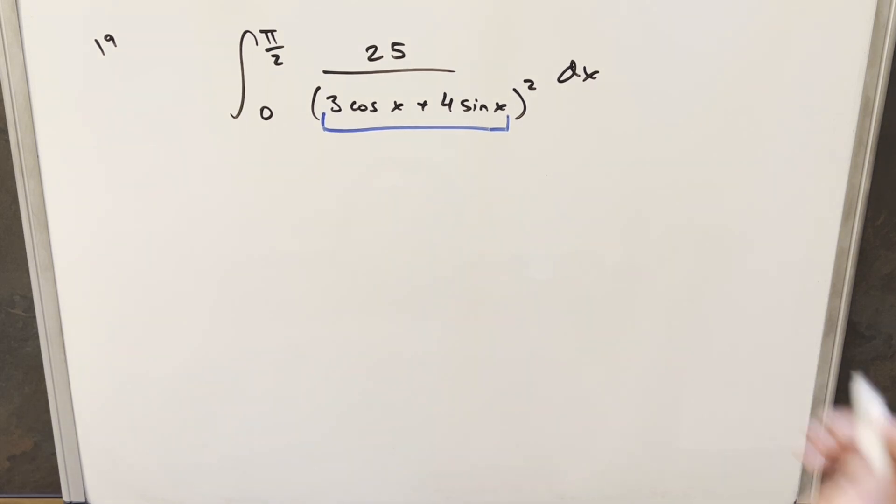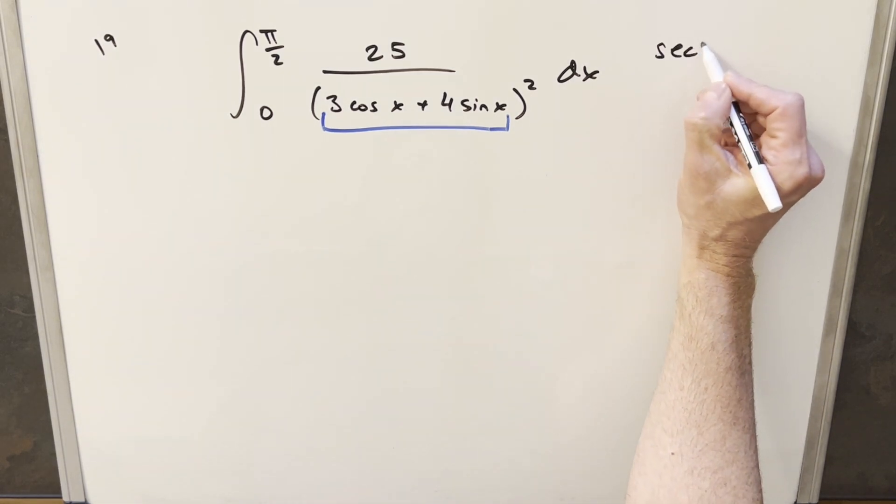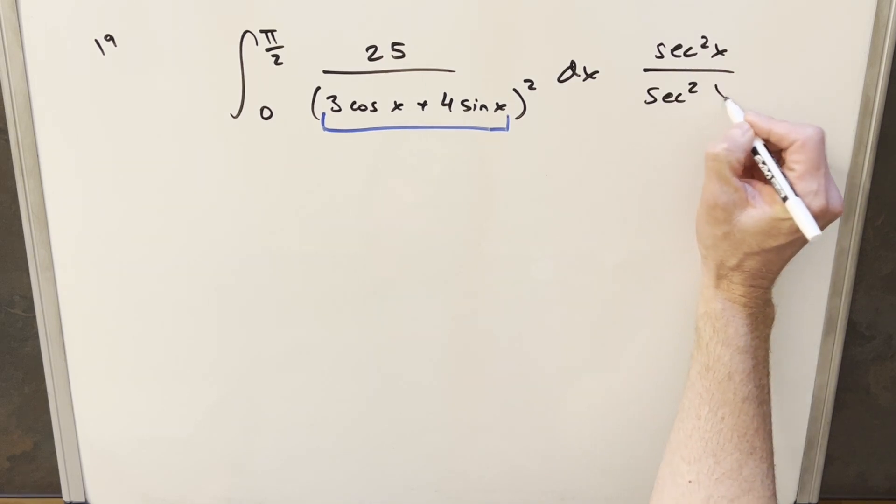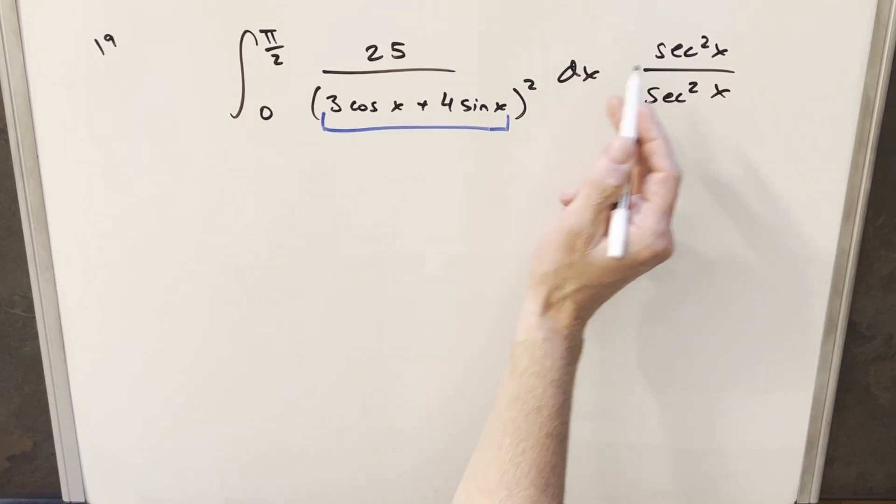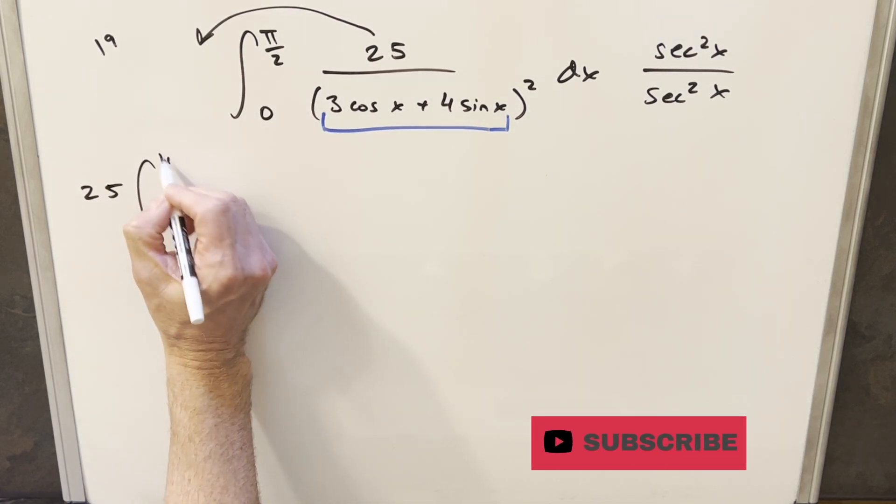What I want to do now is actually quite a bit different. Instead of messing with that at all, what I'm going to do is just multiply the whole integral by 1 by multiplying by secant squared x over secant squared of x. So distributing this in, first I'm going to take the 25 and just bring it outside of the integral as a constant value.